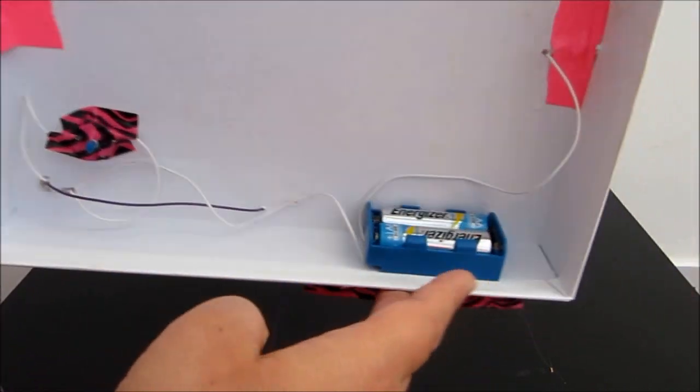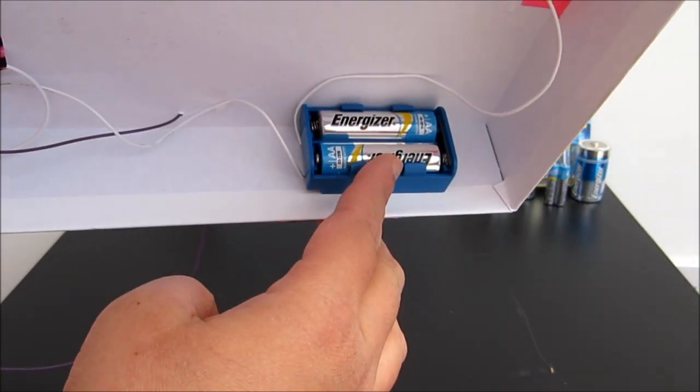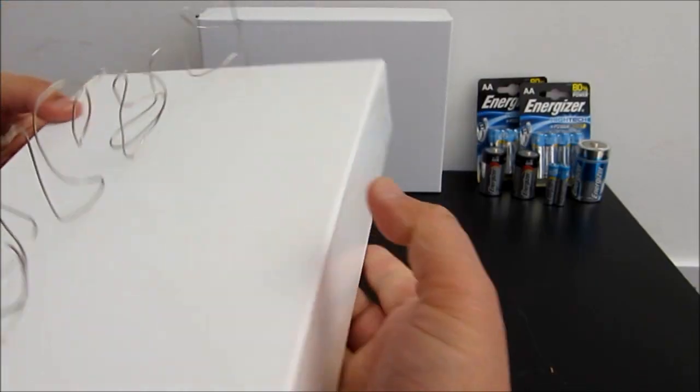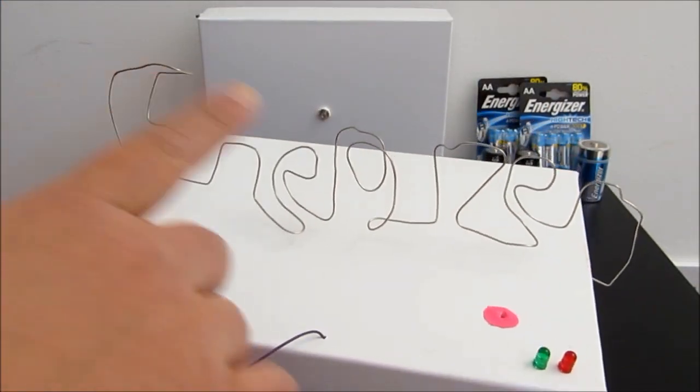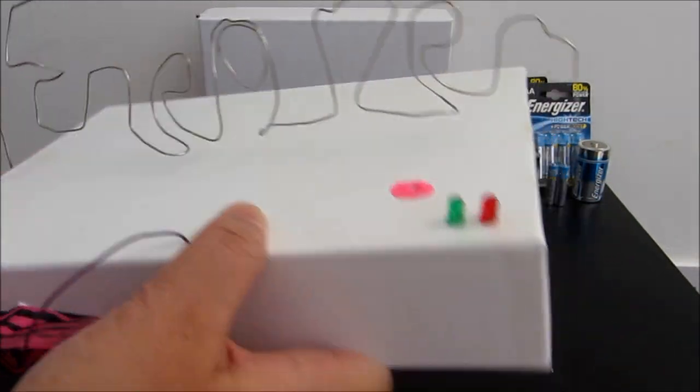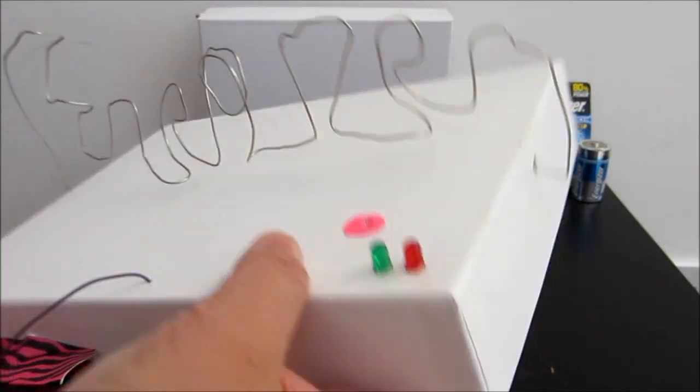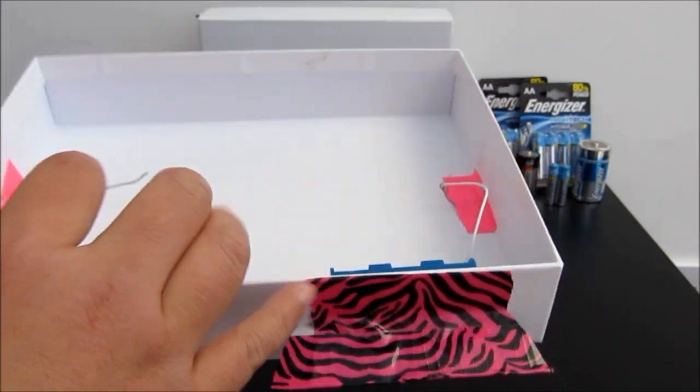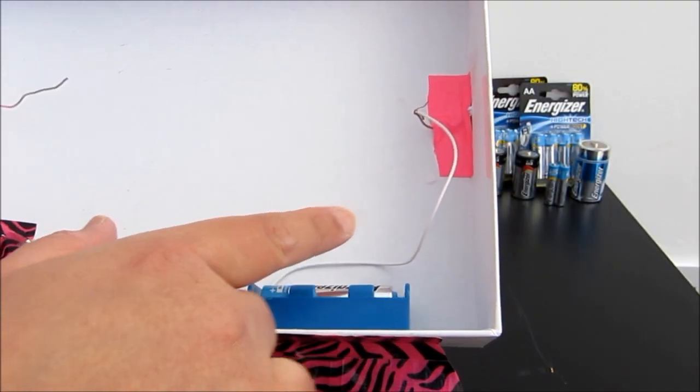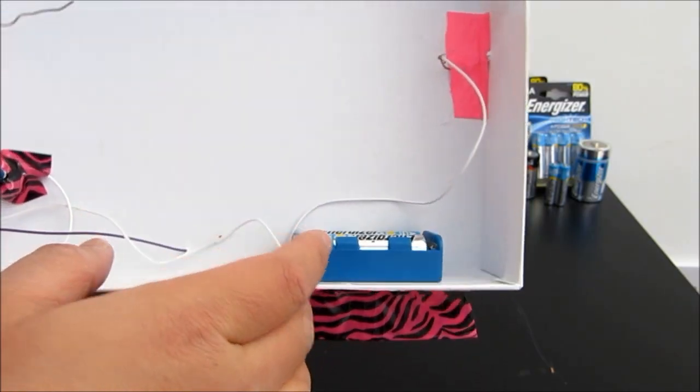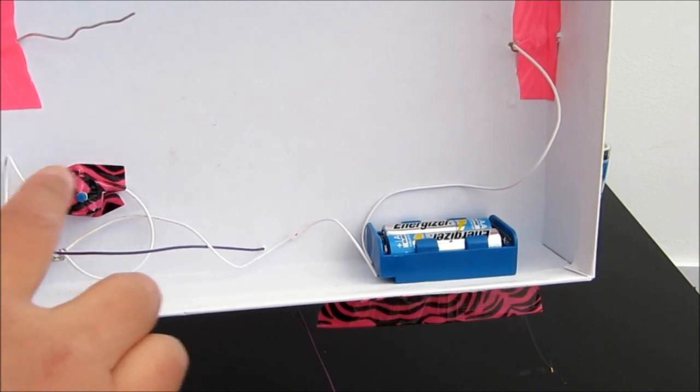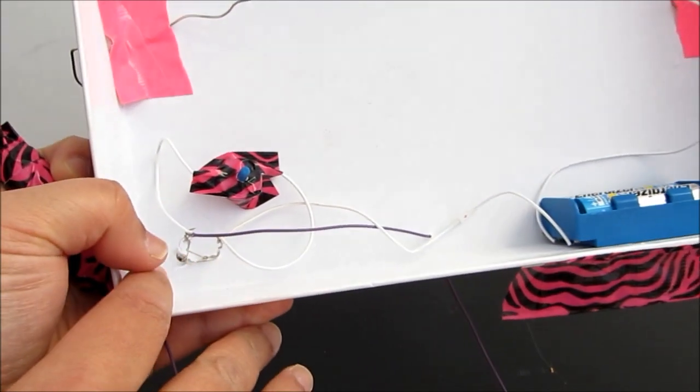This is the buzzer that we bought and we also have a battery holder. First, once we have done our loop, we put two holes on the side here and through the other one, and just connect one side of the cable to the negative point.